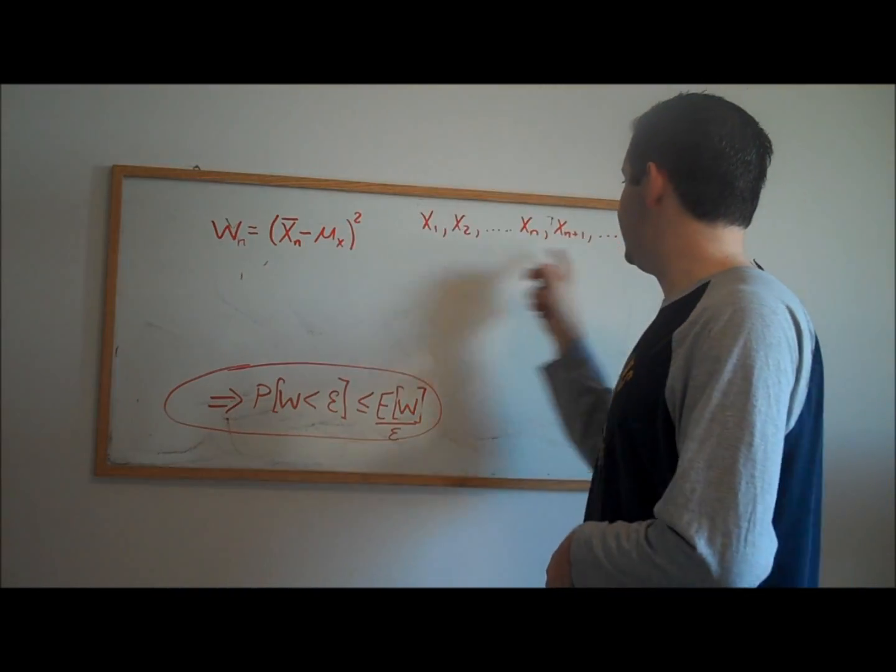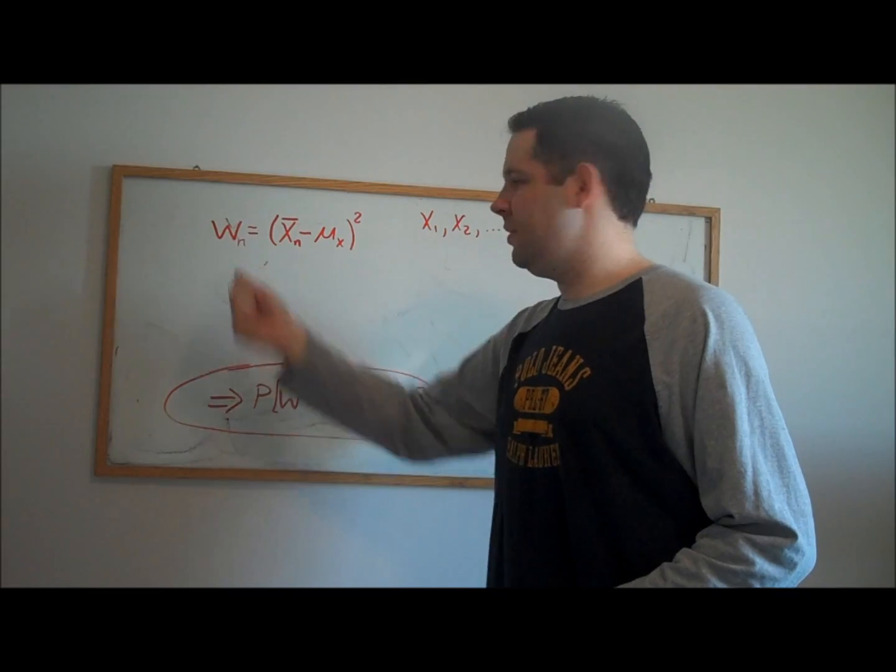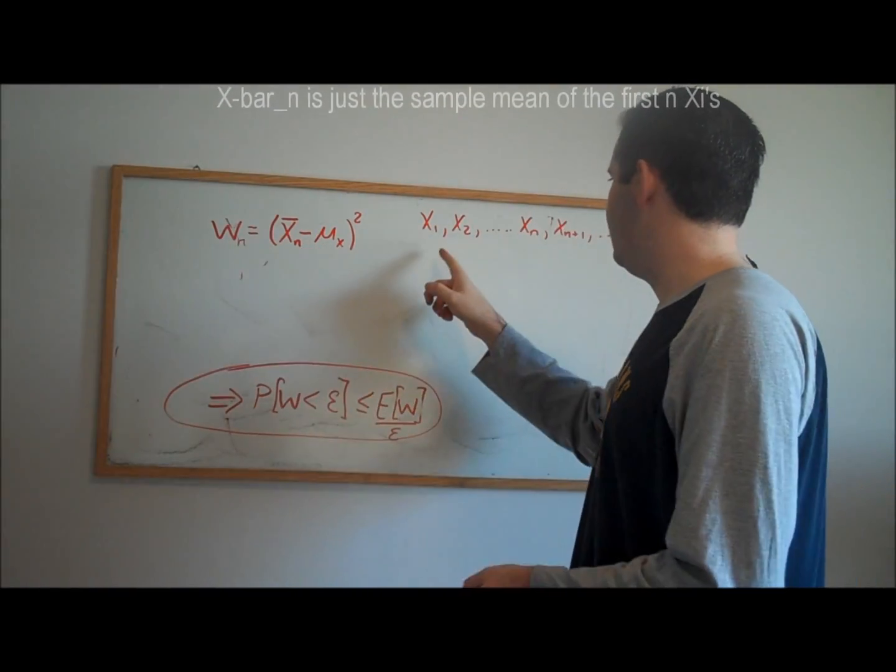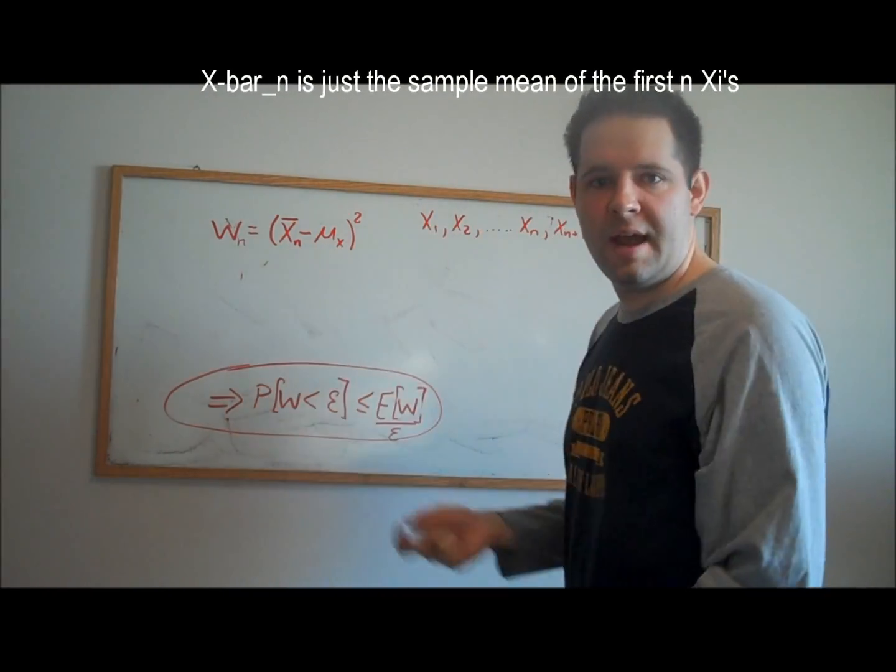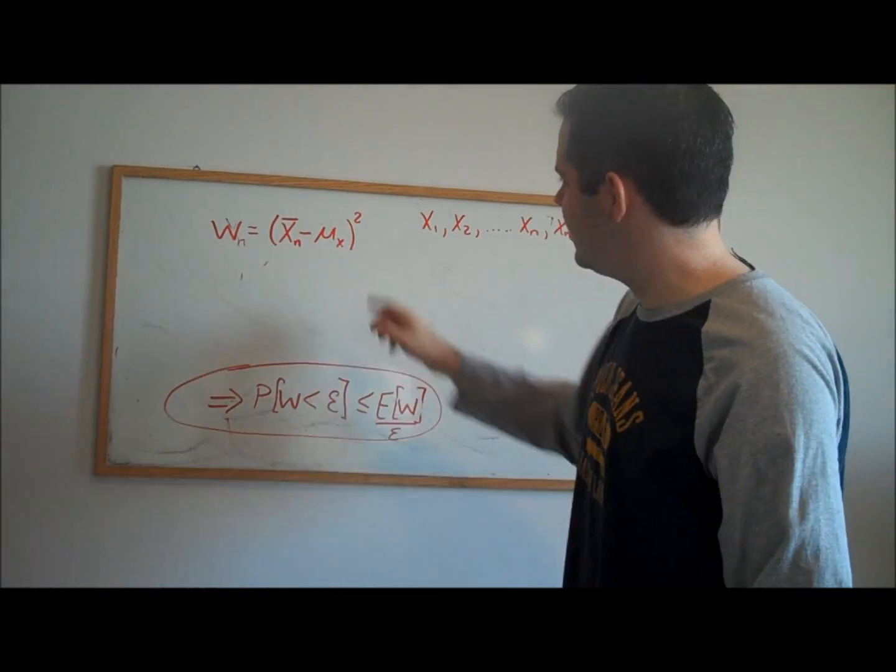Let's define some w that's a positive random variable. I'm envisioning that I have a sequence of random variables, and for the nth random variable in this sequence, I'm going to take the first n, and I'm going to average it up, and I'm going to subtract off the mean. To make this positive, I'm just going to square it.